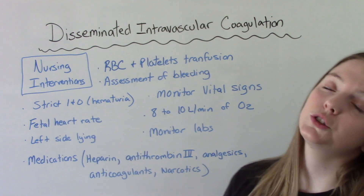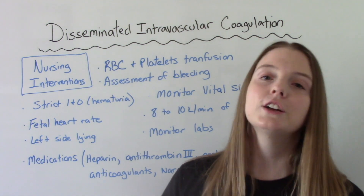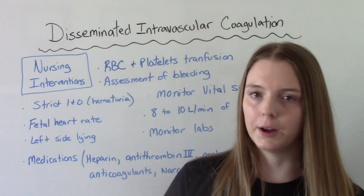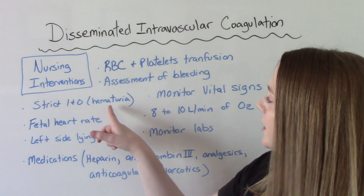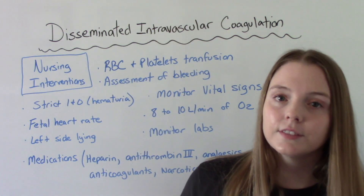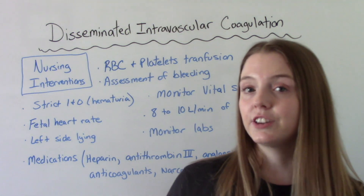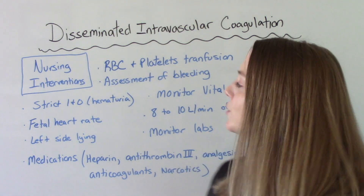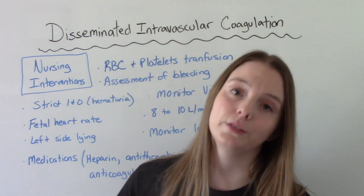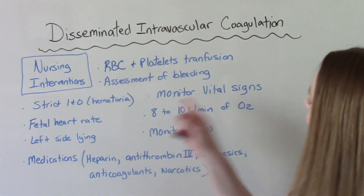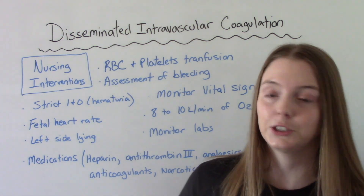These patients are going to be on strict intake and output. They will have a Foley catheter placed so we can measure urine output, and we'll also be looking for blood in the urine — hematuria. A big risk in DIC is kidney failure, so monitoring urine output helps us track how the kidneys are doing. Of course, we also want to monitor vital signs, especially blood pressure.